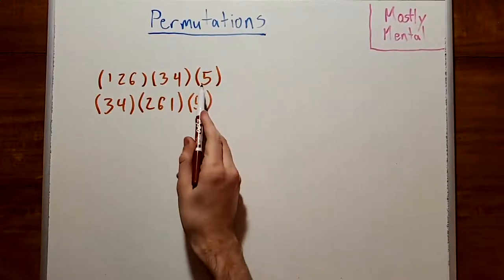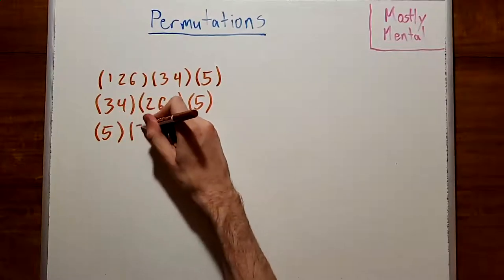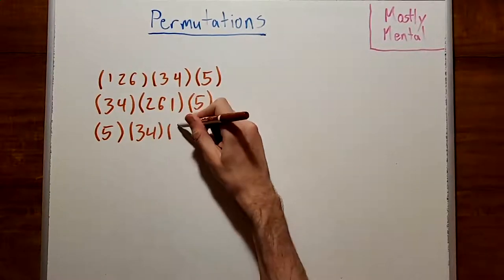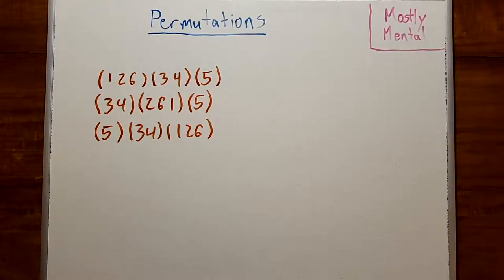Or we could take our cycles and put them in the opposite order, which gives us (5)(3, 4)(1, 2, 6). And these are all representing the same permutation.